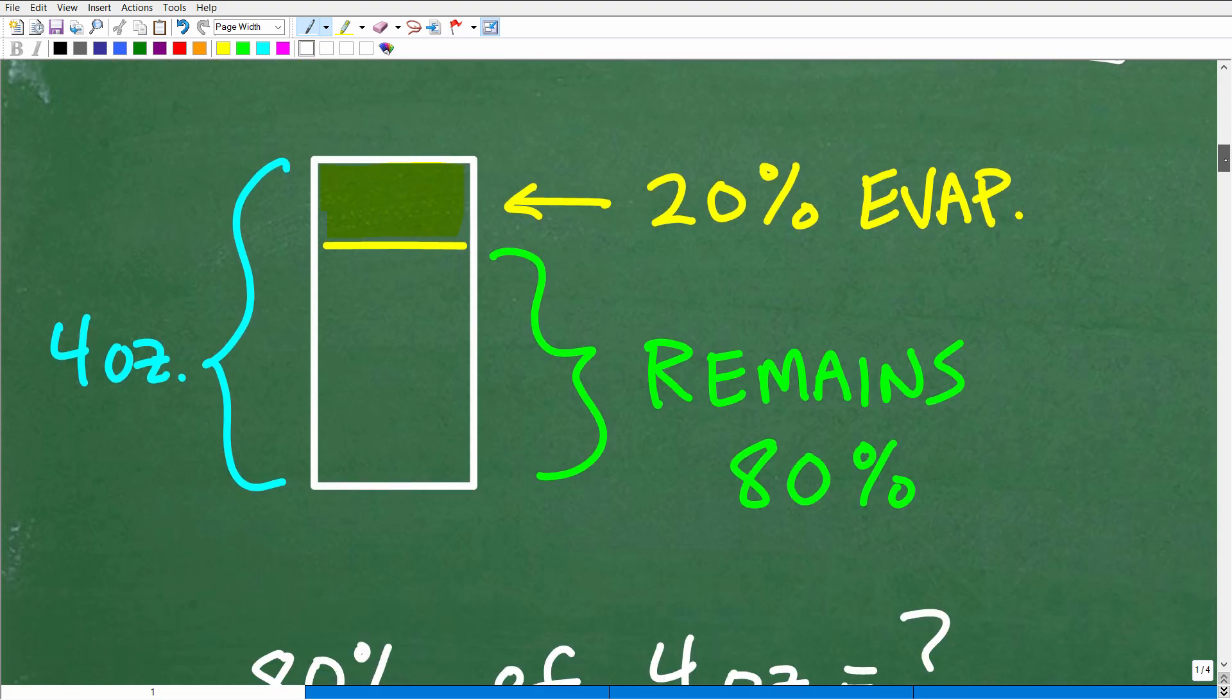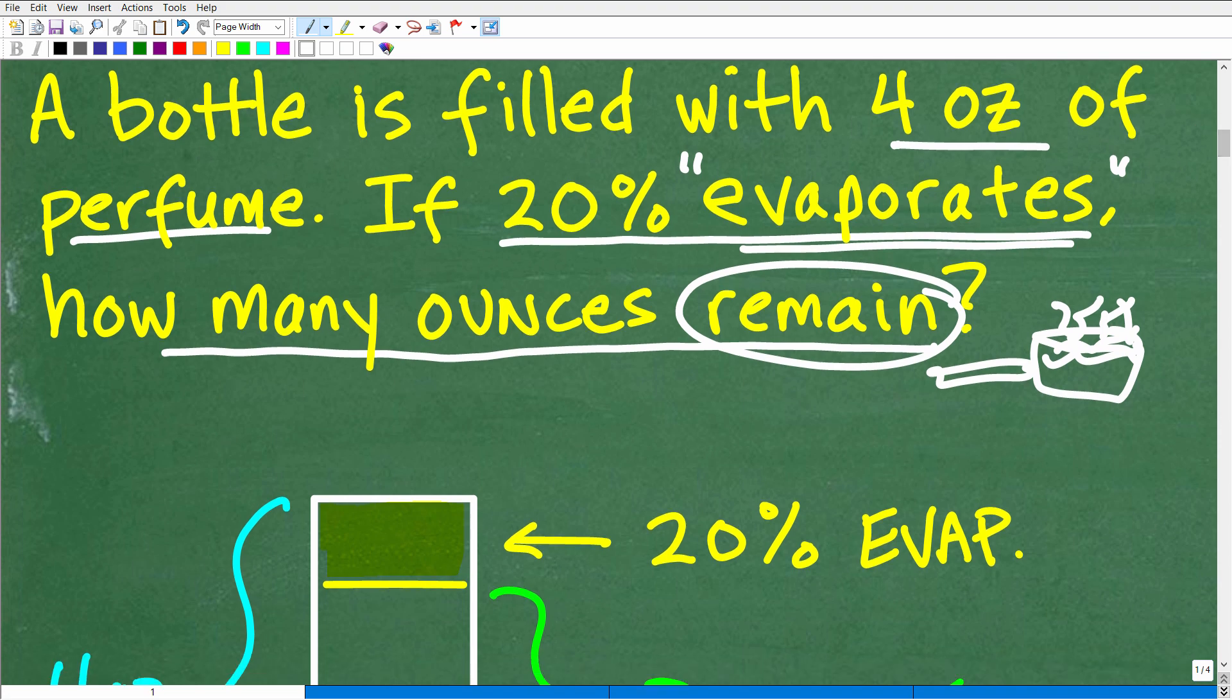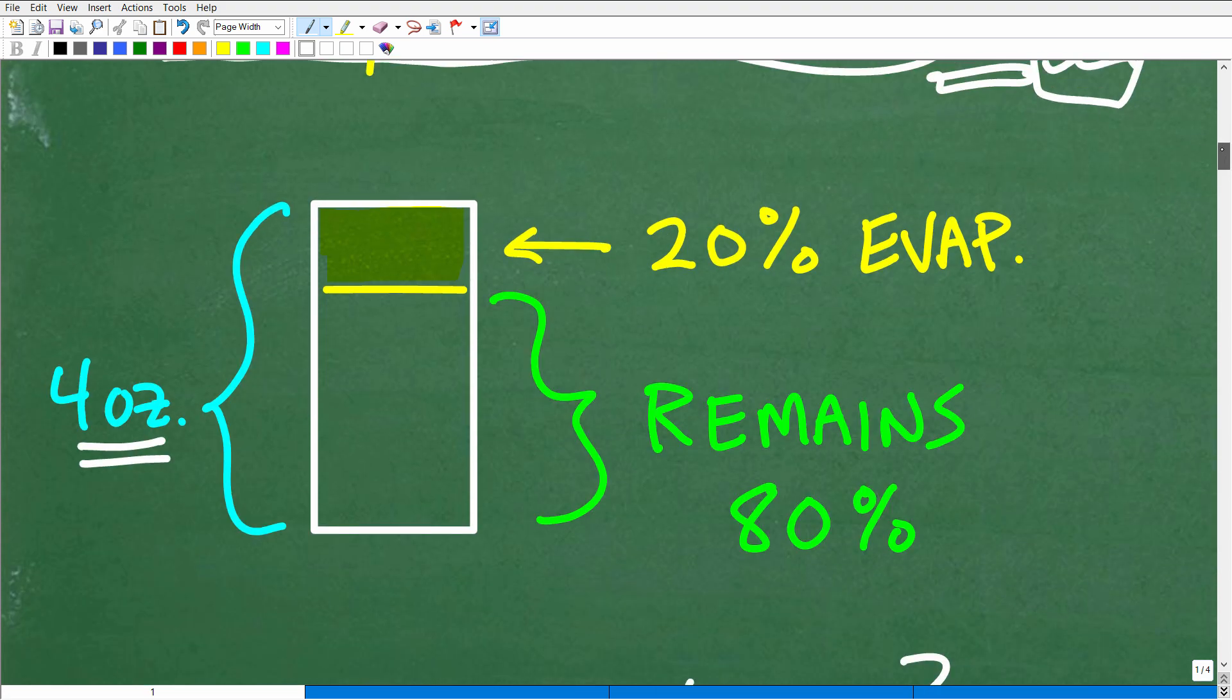How many ounces are left over after 20% of this bottle evaporates away? So what we want to do is always kind of model this. So here is my lovely perfume bottle. And I know that it's filled, it was filled up with four ounces of perfume. So I'm kind of pulling that detail right here. So a full bottle is four ounces of perfume. And I know that 20% is going to evaporate away. So 20% is maybe something like this much of the bottle right here. This is going to disappear, it's going to evaporate.